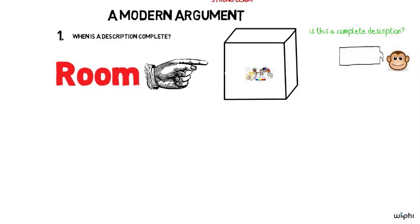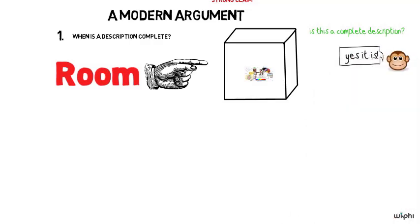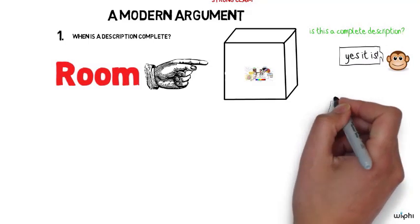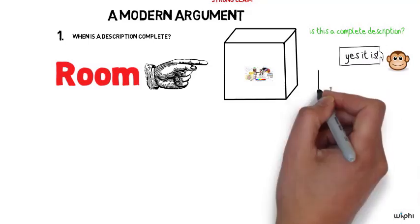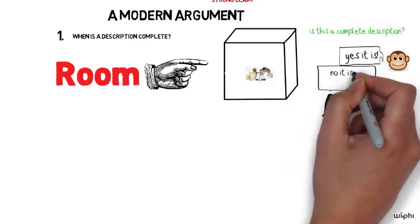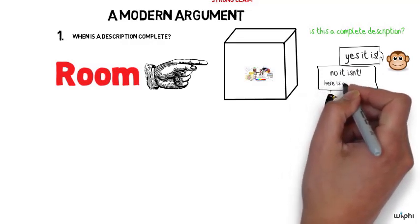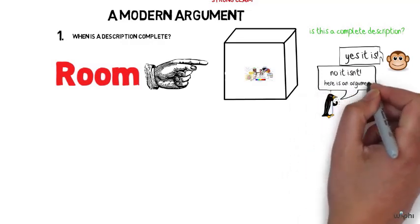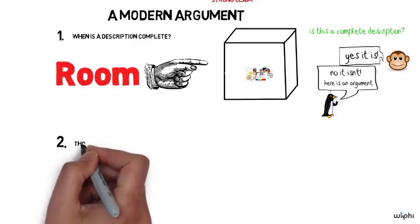Is it in principle possible for me to get to the point where there are no further questions of the form, you've left something out, tell me more, to be asked? Some people claim there is. It is possible to get to this point. Other people say it's not possible to get to this point. So here we'll look at an argument to the effect that there are aspects of reality that cannot be described in the language of the natural sciences.